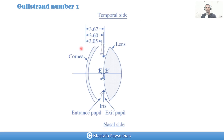Based on the Goss Rand number one eye optical model, we have those numbers. For the iris, the distance from the cornea is 3.6 mm. For the exit pupil, it's pretty close at 3.67 mm. And the entrance pupil is at 3.0 mm. So you can see there is about 0.6 mm difference between the entrance pupil and the real position of the iris.